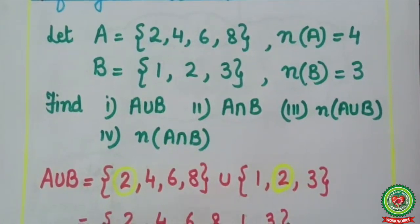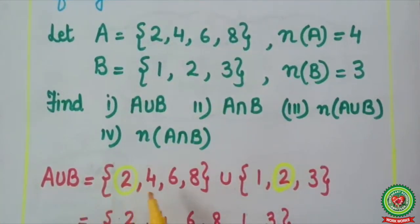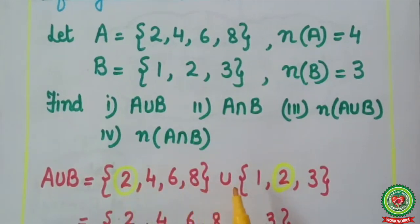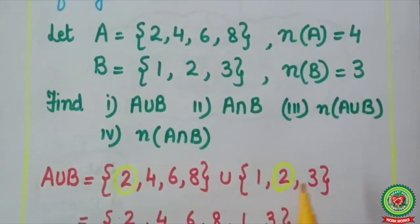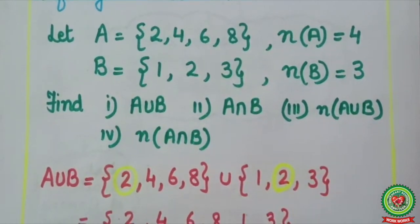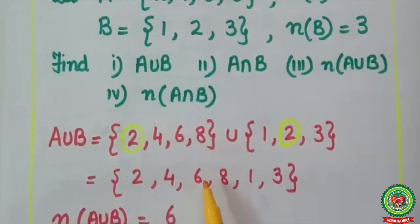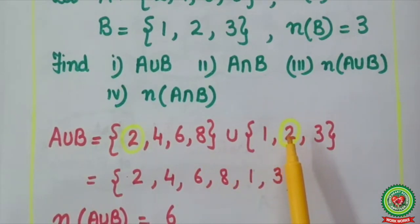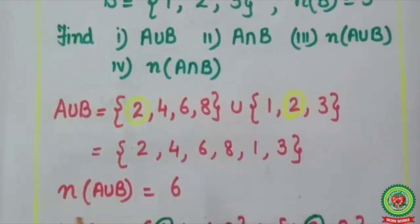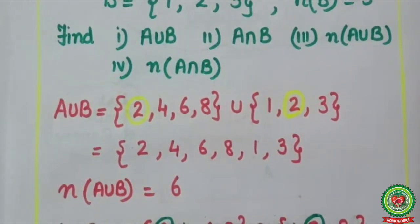To find A∪B, I will write set A = {2, 4, 6, 8}, then the union symbol, then set B = {1, 2, 3}. As A∪B consists of all elements of A or B without repetition, the result is {2, 4, 6, 8, 1, 3} — I will not write 2 again since it is repeated. So the cardinal number of A∪B is 6, as 6 elements are present.